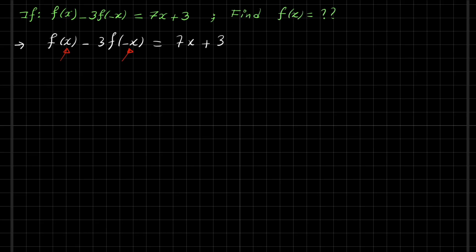So this is equation 1, and when we replace x by negative x, then we get f of negative x minus 3 f of minus x, which becomes x, equal 7 times minus x. So this is minus 7x plus 3. So this is equation 2.